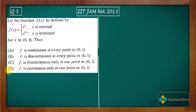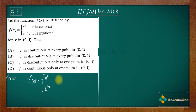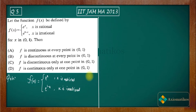So what we have is a multivalued function: e^x when x is rational, and e^(1-x) when x is irrational. The question asks: (A) f is continuous at every point in [0,1]; (B) f is discontinuous at every point in [0,1]; (C) f is discontinuous only at one point in [0,1]; (D) f is continuous only at one point in [0,1].